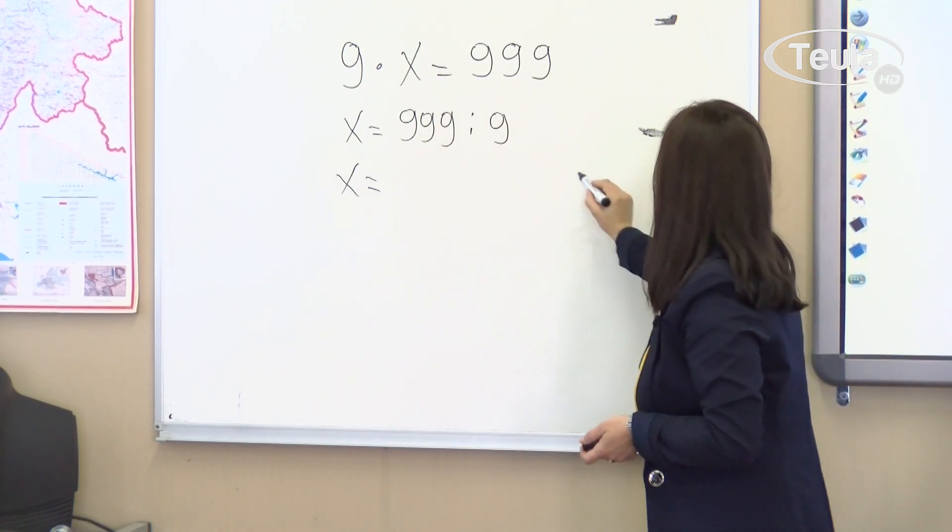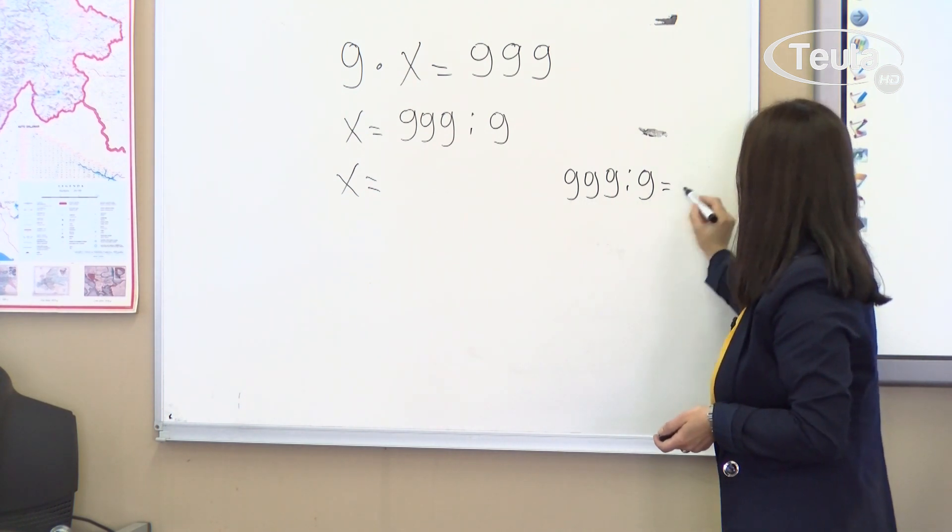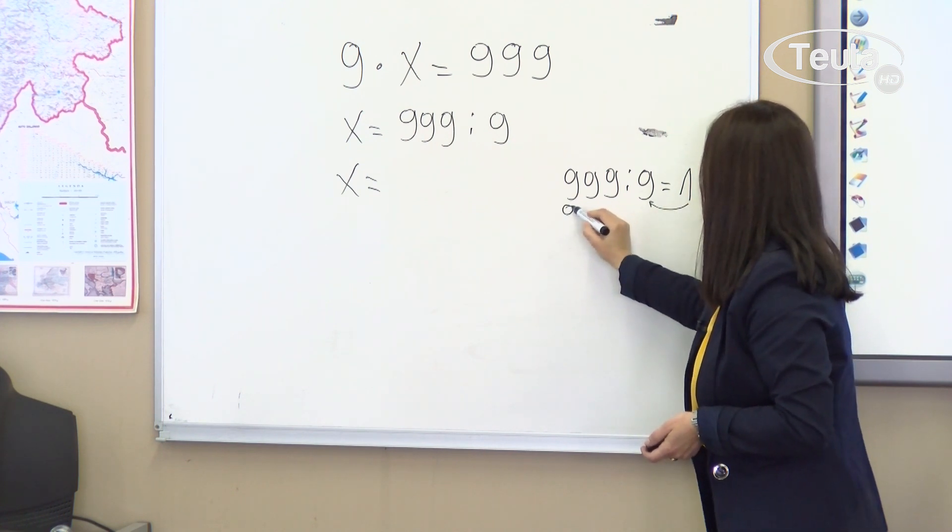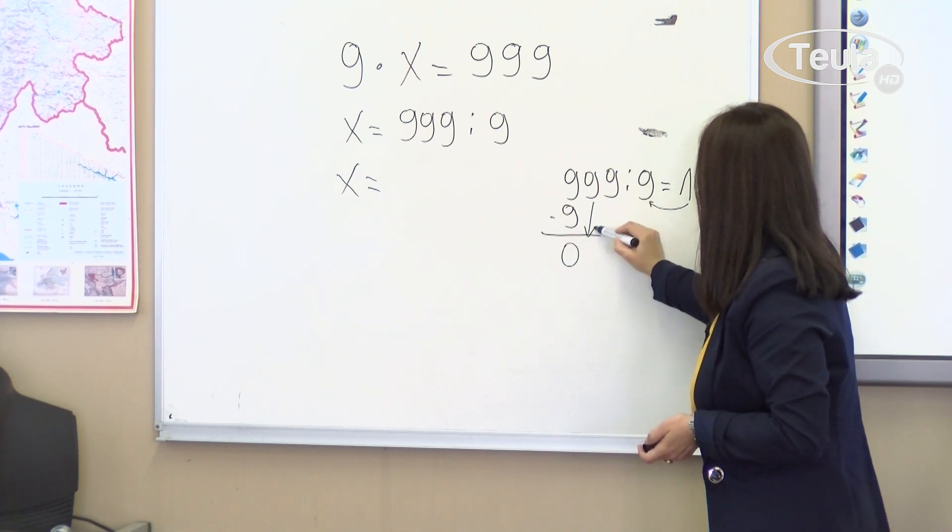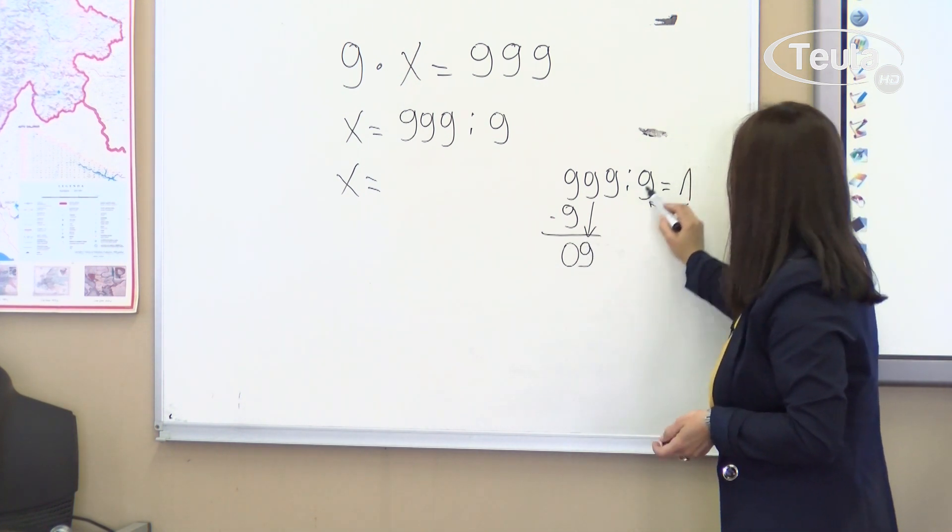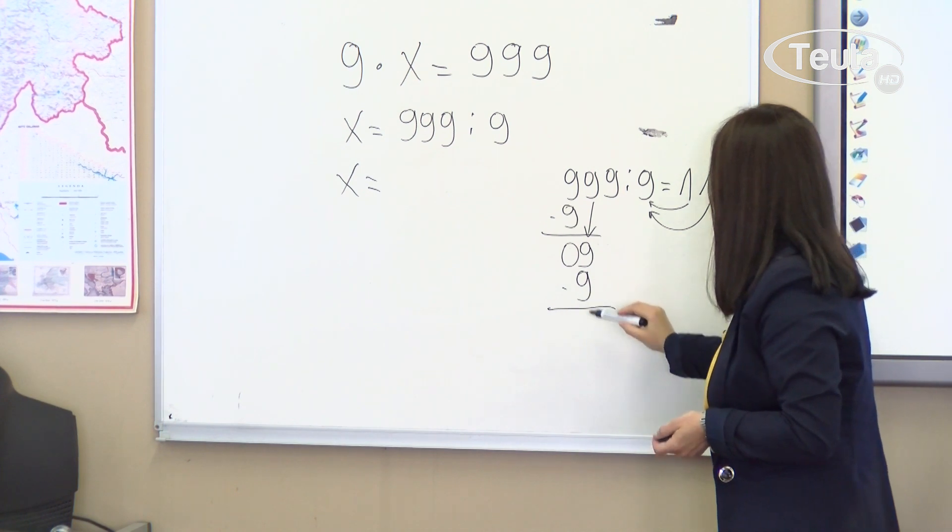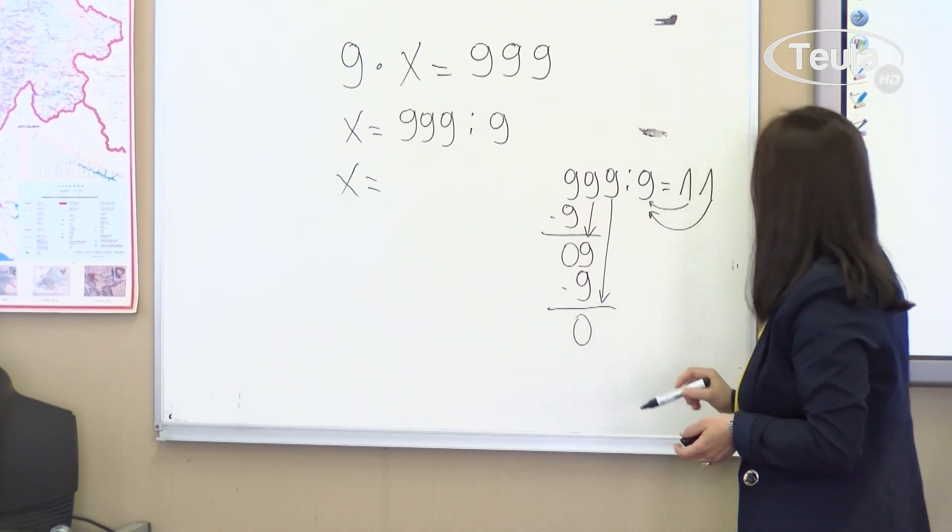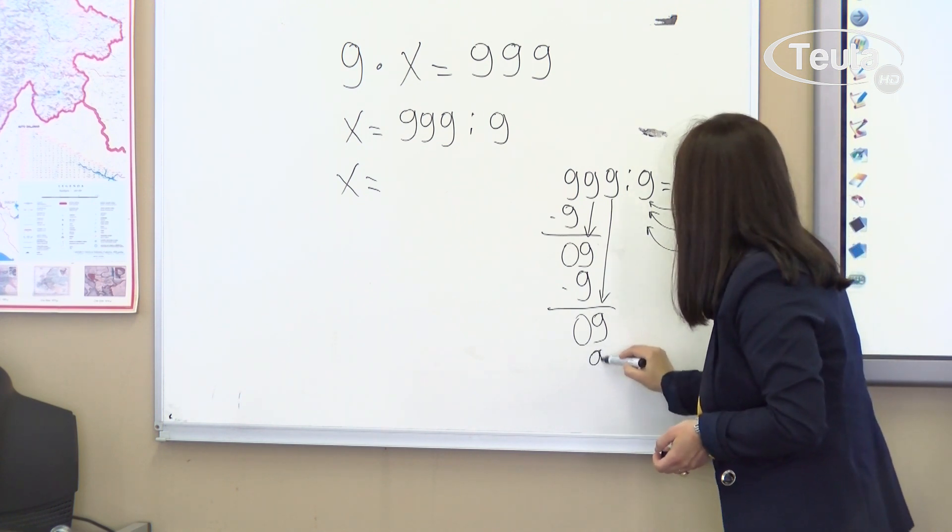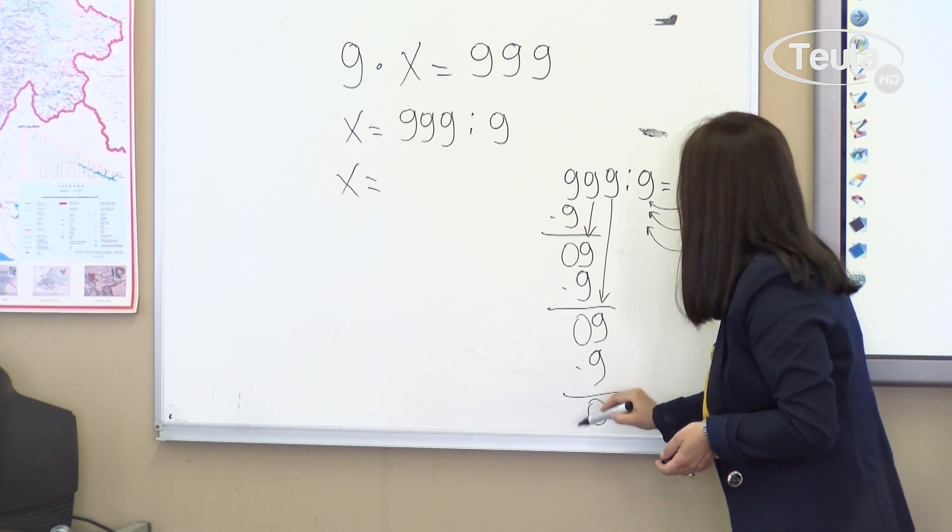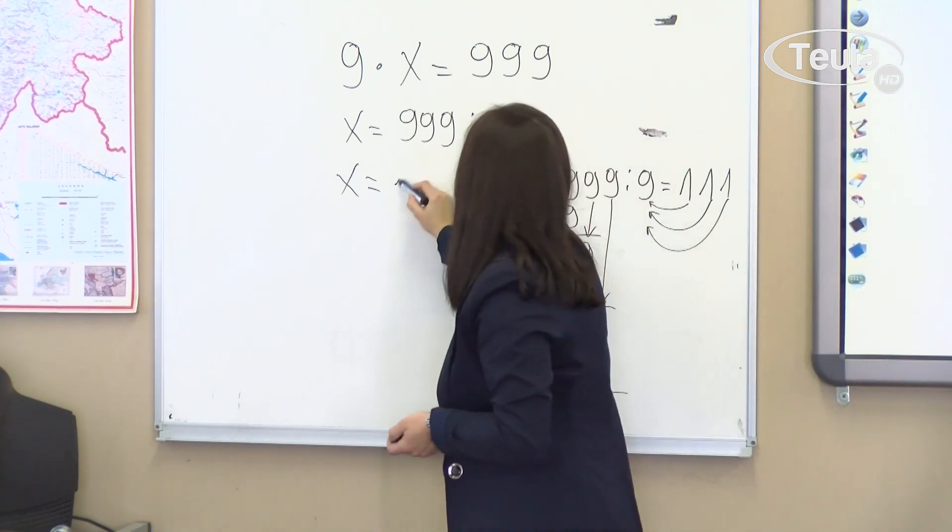x equals. We divide 999 by 9, equals. 9 divided by 9 is 1. 1 times 9 is 9. We write 1 times 9. 9 minus 9 is 0. Now bring down the 9. 9 divided by 9 is again 1. 1 times 9 is 9. Subtract. 9 minus 9 is 0. Now we have another 9 to bring down. Bring it down. 9 divided by 9 is 1. 1 times 9 is 9. Subtract. 9 minus 9 is 0. 999 divided by 9 gives us 111. We write 111.